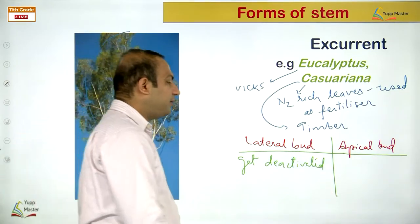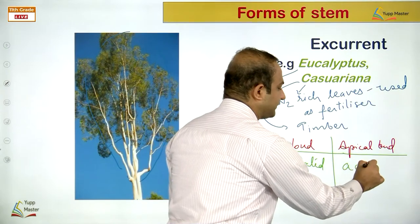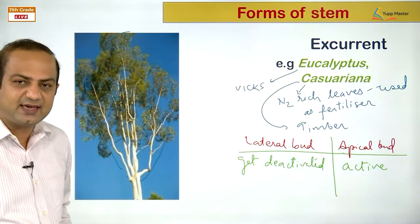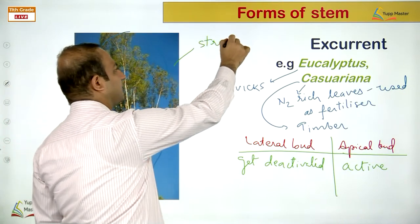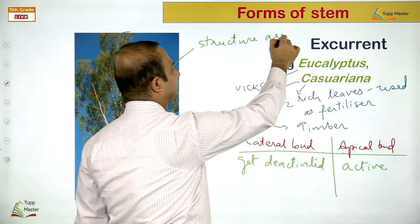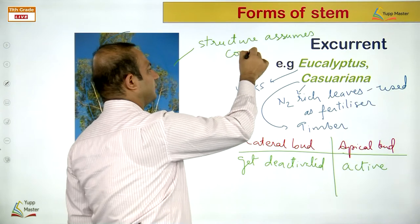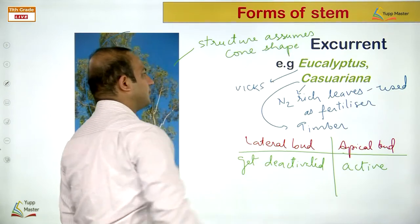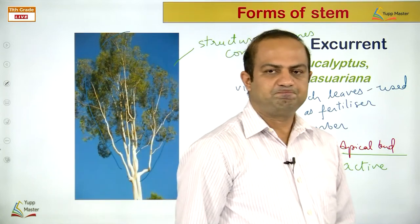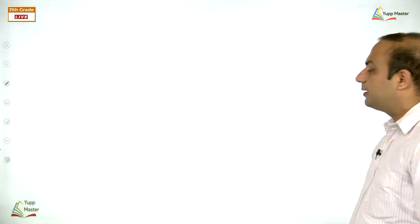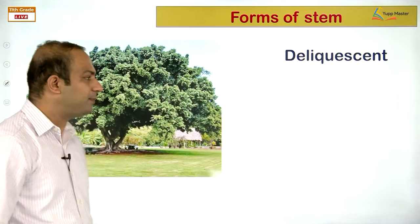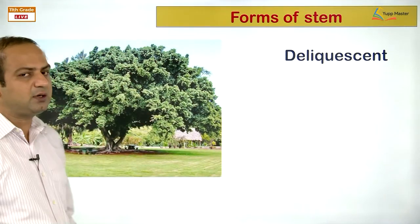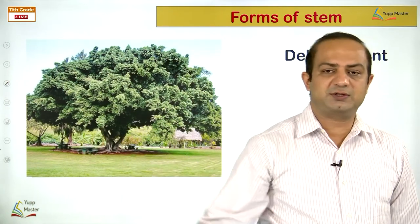Offset has a single internode with a bunch of leaves at the apex and a tuft of roots at the base — seen in Eichhornia (water hyacinth), also known as the 'terror of Bengal' — an invasive weed that spreads very fast due to vegetative propagation. Among weak stems — creepers, trailers, lianas, and climbers — only creepers are considered sub-aerial modifications of the stem that propagate vegetatively.